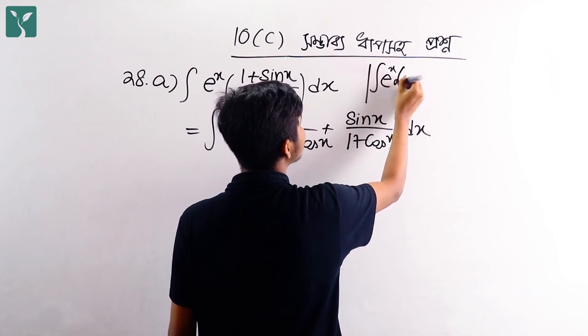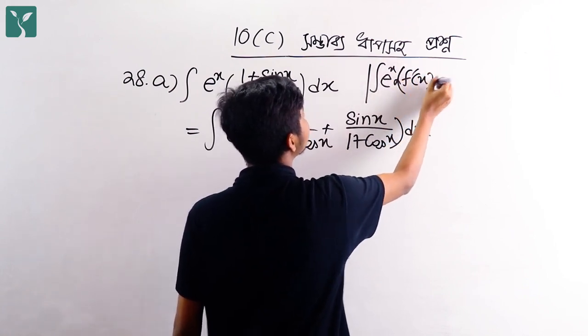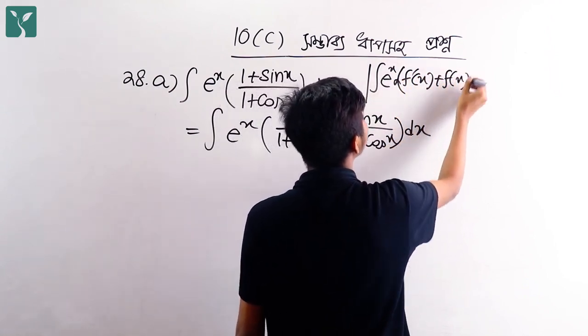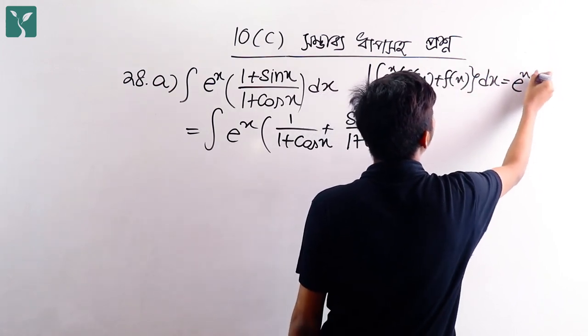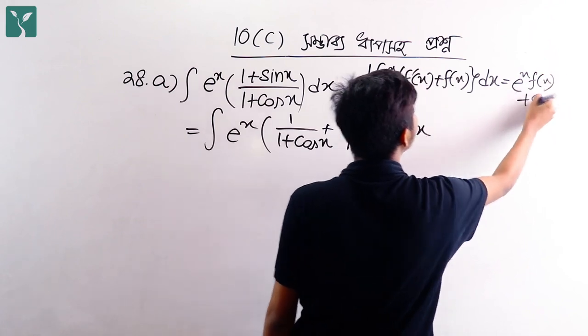The formula is: integration of e to the power x into f prime of x plus f of x dx is equal to e to the power x times f of x plus c.